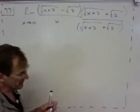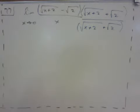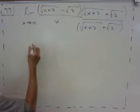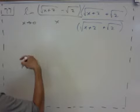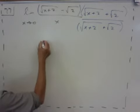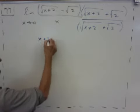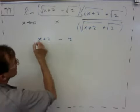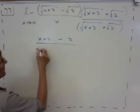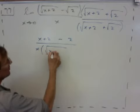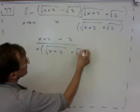So we multiply numerator and denominator by the conjugate and see if that does anything. The numerator, the radicals will cancel. The conjugate means the middle terms will go away. So we're going to get x plus 2, and then we're going to get minus 2.